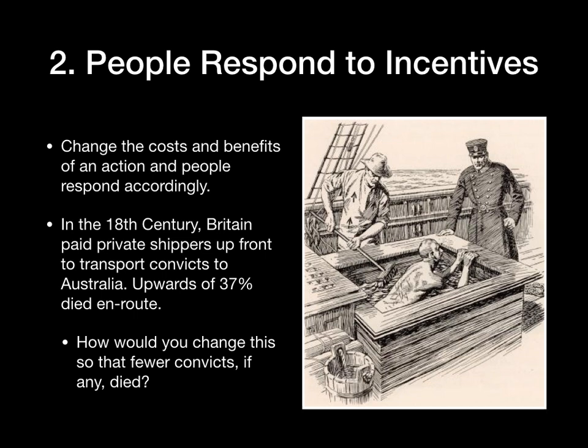Australia was the penal colony for Great Britain. They would pay shippers to transport convicted criminals to Australia, but more than a third would die on the way there. Nobody wanted that — they weren't sentencing these criminals to death. The question is: how do you change it? They paid shippers per convict as they boarded the ship. The solution was to pay them when the prisoners got off the ship — and sure enough, the number of people dying fell to almost zero.